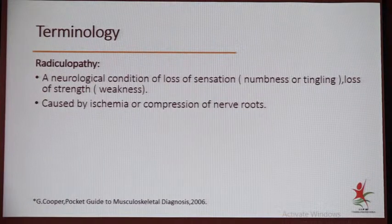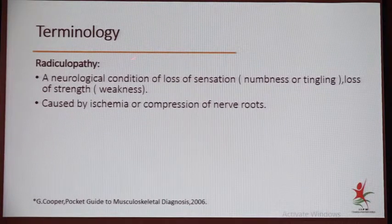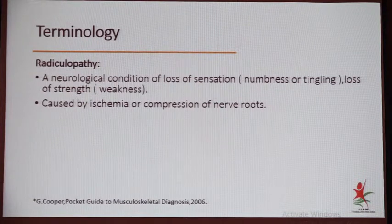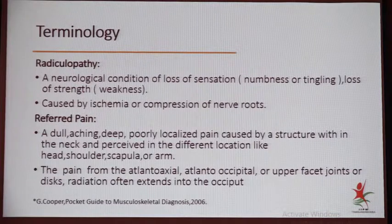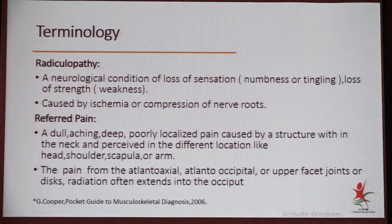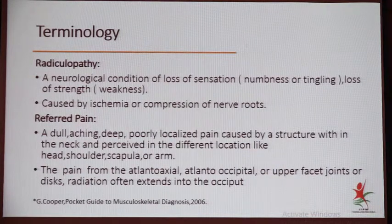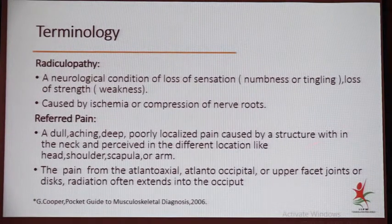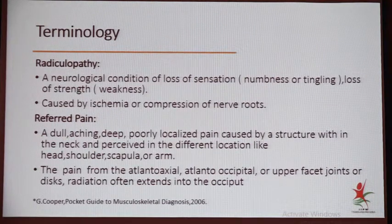Radiculopathy is associated with weakness or affection of the nerves with altered sensation — numbness, tingling — meaning weakness or loss of sensation will be present, caused by ischemia of the nerve roots. Referred pain is very important because most of the time we get confused about whether the real pain is arising from the neck itself or perceived from some other organ. It is dull, aching, deep, poorly localized pain caused by structures within the neck and perceived in a different location like the head, shoulder, scapula, or arm — we totally miss the diagnosis of the neck pathology.